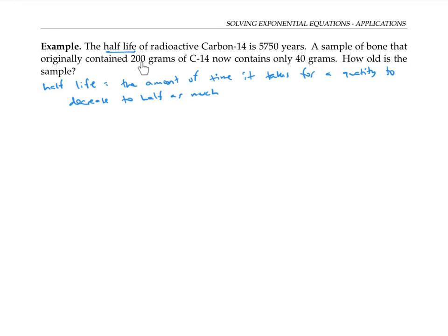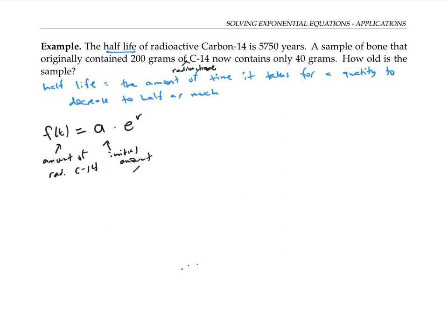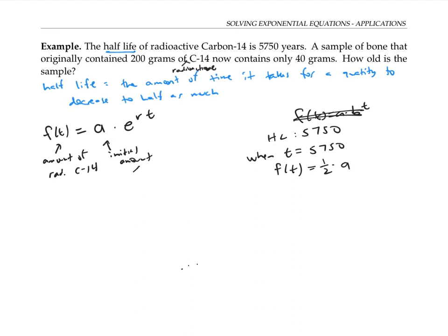A sample of bone that originally contained 200 grams of radioactive carbon-14 now contains only 40 grams. We're supposed to find out how old the sample is — this is called carbon dating. Let's use the continuous growth model this time. Our amount of radioactive C-14 is going to be the initial amount times e to the rt. We know that our half-life is 5,750. So when t is 5,750, our amount is going to be one half of what we started with. Let me plug that into my equation to figure out what r is.